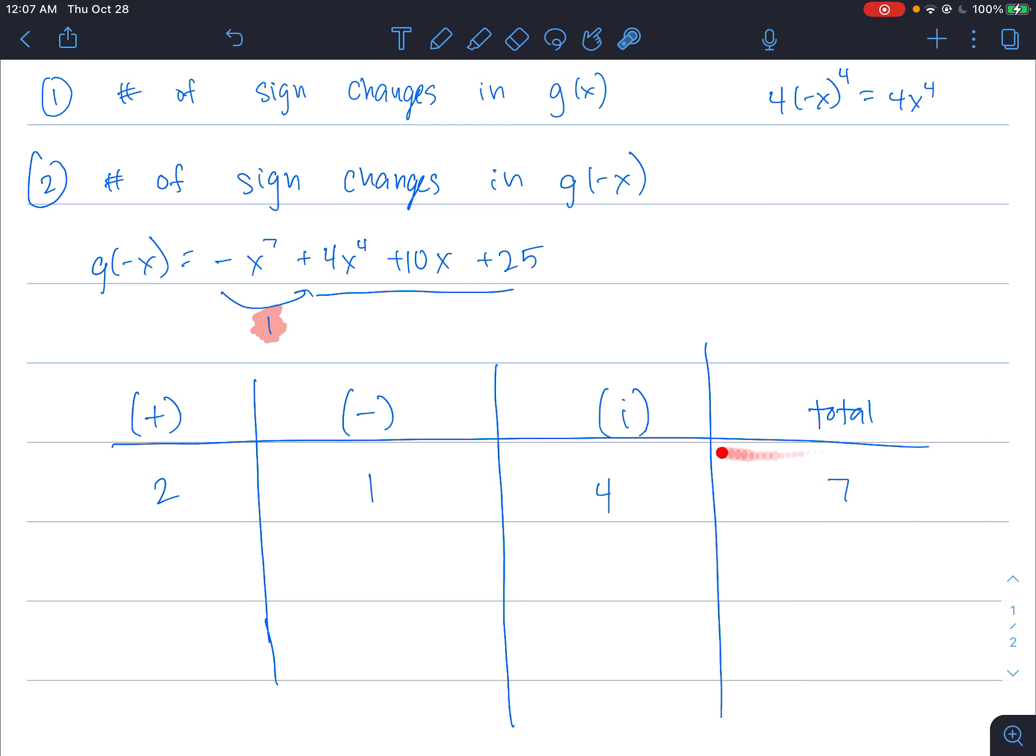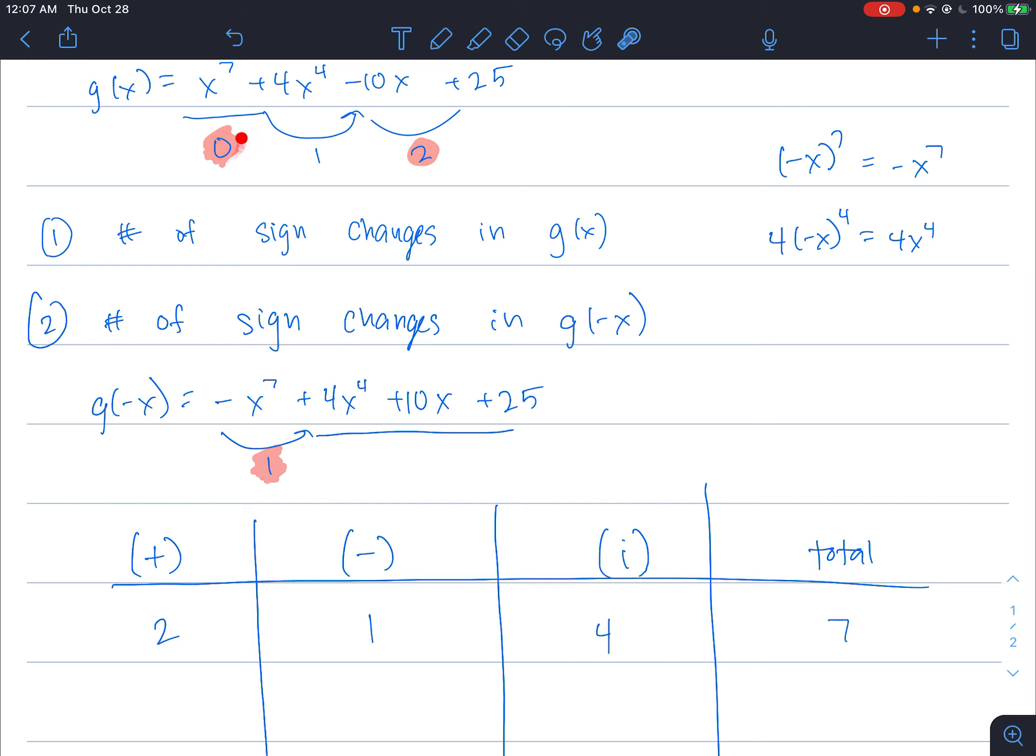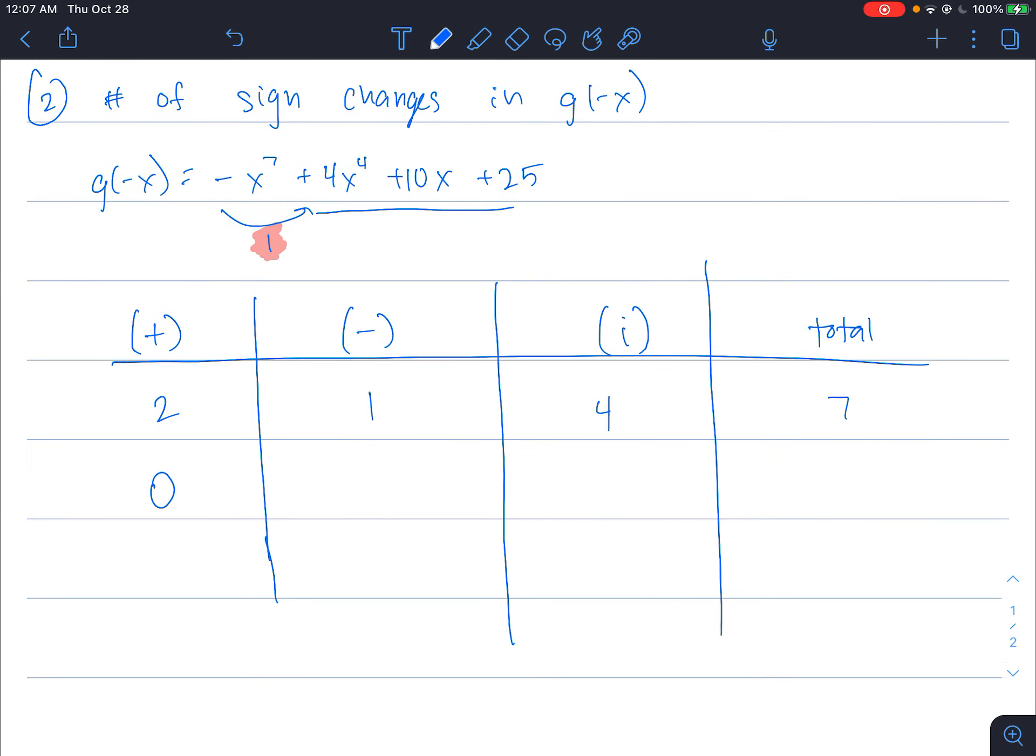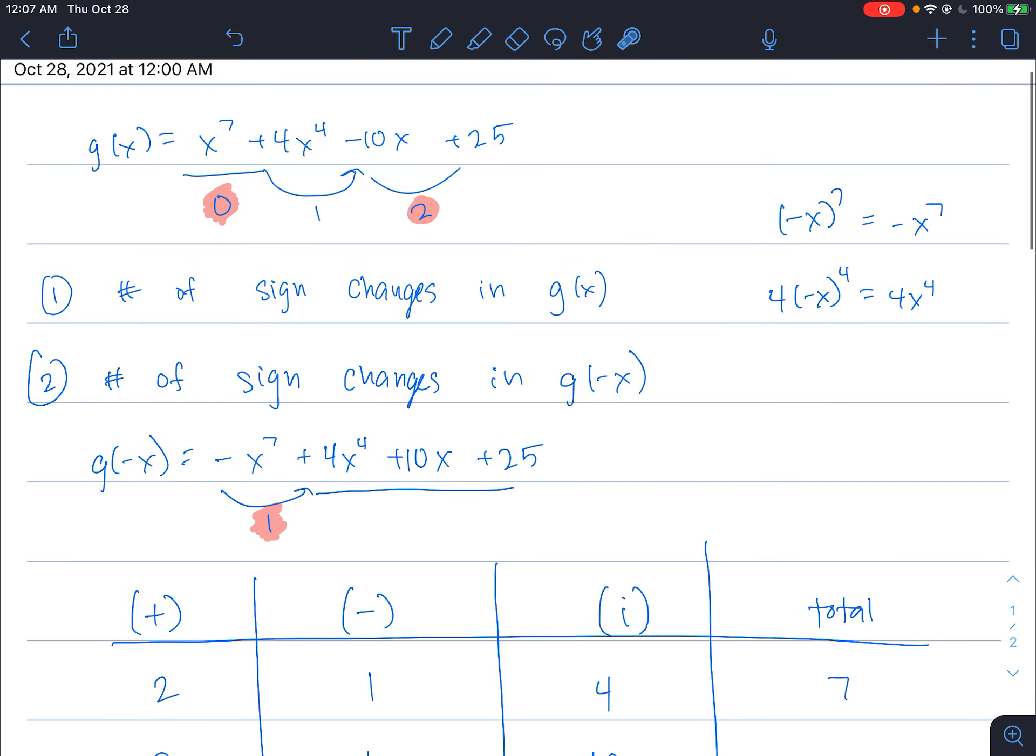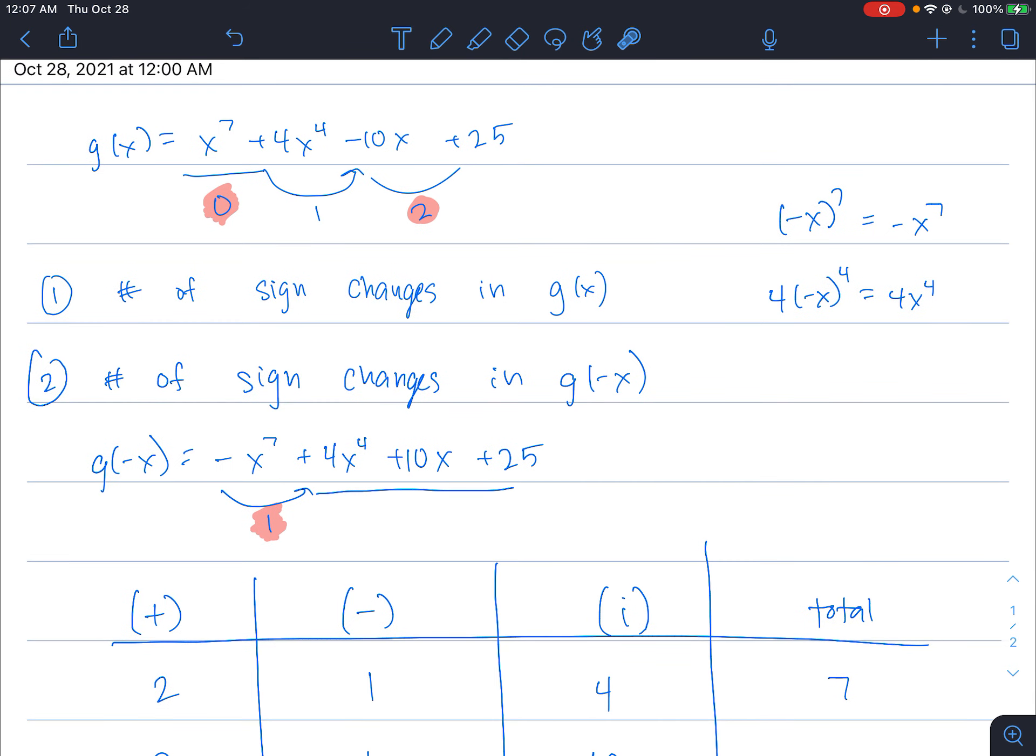This isn't the only possibility. Remember that we could also have 0 positive numbers. We'll still have 1 negative, so we could have 0 positive, 1 negative, and there's still going to be 7, which would leave me with 6 imaginaries. So this polynomial g(x), we're going to find either 2 positive, 1 negative, 4 imaginary, or 0 positive, 1 negative, and 6 imaginary zeros. That's what this polynomial, this is what Descartes' rule of signs is about. Hopefully this was a good example to get you going on those other ones.